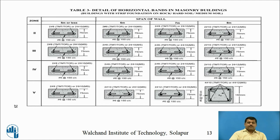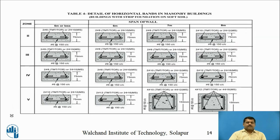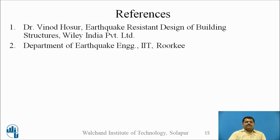There are also provisions for different types of buildings and zones showing sections of the RC bands. The depth of the RC band depends on the zone and the span or length of the wall. In some sections a hook is used, in others lateral stirrups are required — these details are based on the wall span and zone. These are the references for this session.